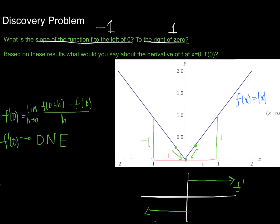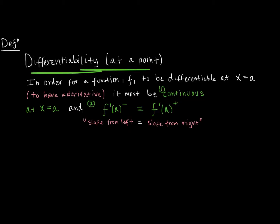Let's go ahead and formalize this. Hopefully that made a little bit of sense. We'll look at a bunch of different examples and classify the different types of situations where a function would not be differentiable. Here's the definition of differentiability at a point. Differentiability just means does your function have a derivative? If your function has a derivative at a certain point, we say it's differentiable at that point — meaning does the function have a slope, an instantaneous rate of change, at that exact point?